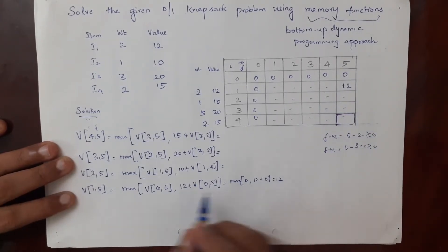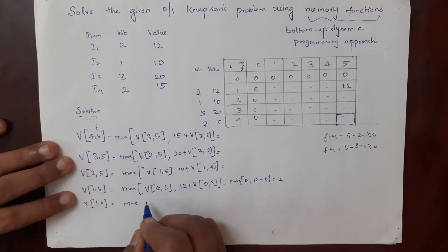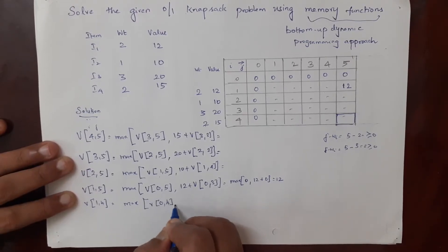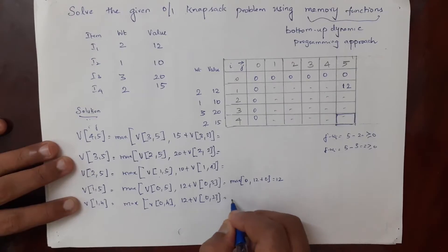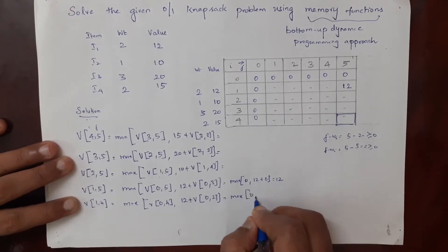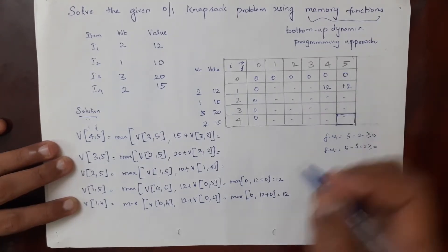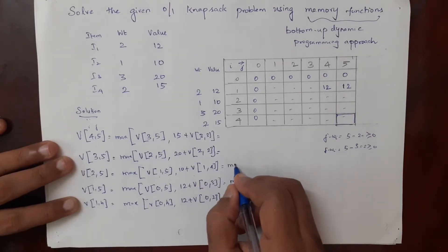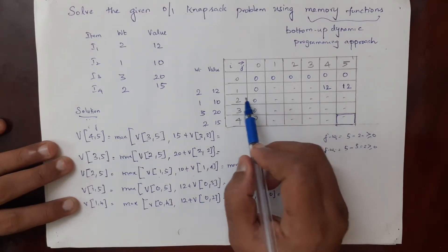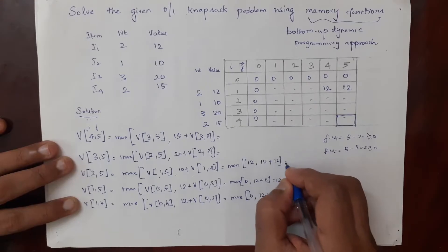Now we calculate v of 1 comma 4: maximum of v(0,4), or value of item 1 (12) plus v(0, j minus wi) = v(0, 4 minus 2) = v(0,2). That is maximum of 0 or 12 plus 0, so v(1,4) = 12. We fill this entry as 12. Now substituting: v(2,5) = maximum of v(1,5) = 12, or 10 plus v(1,4) = 12, giving maximum of 12 or 22. So v(2,5) = 22.